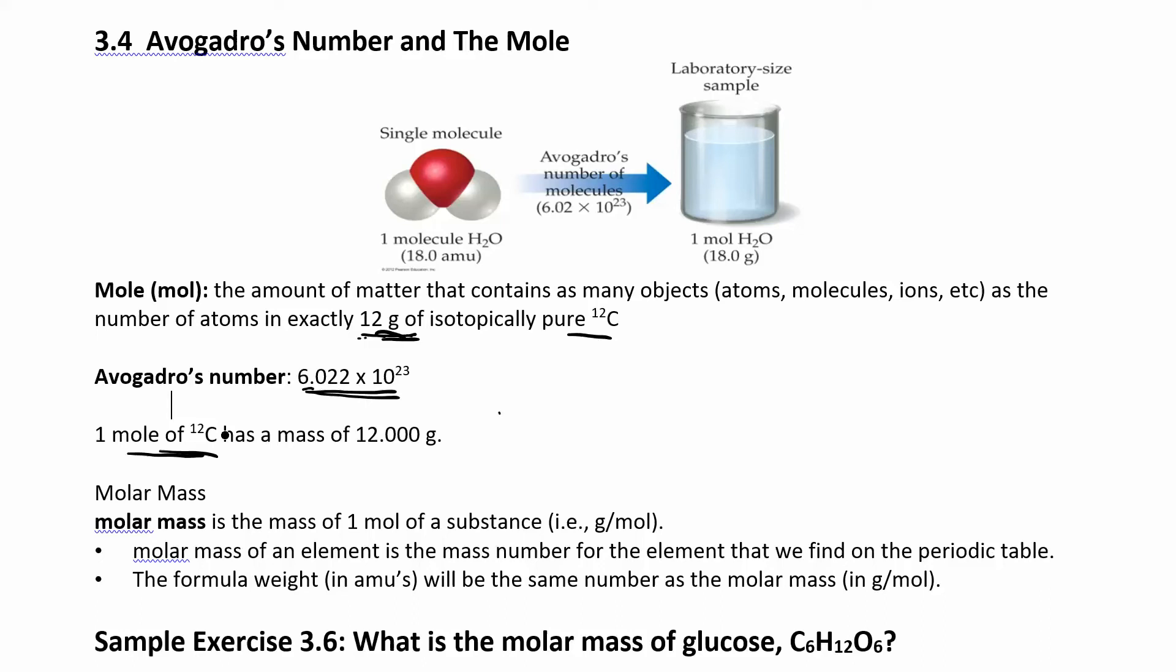So molar mass is the mass of one mole of a substance. So usually we put this in grams per mole. So for carbon there's 12 grams of carbon in one mole of carbon. This is going to be a really good conversion factor when we want to convert between grams and moles.